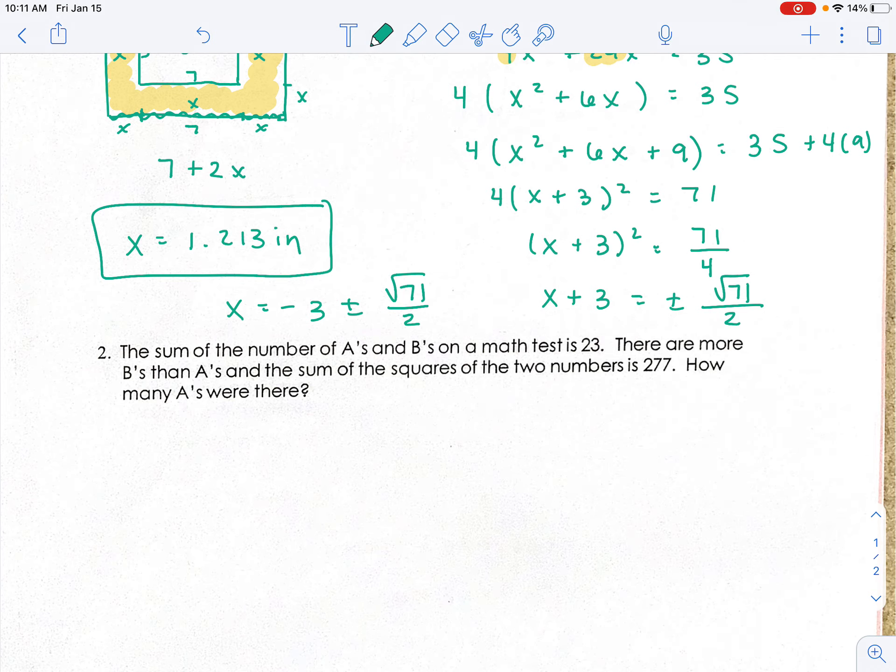All right, another problem here. The sum of the numbers A and B's, sum of the numbers of A's and B's on a math test is 23. So we know the number of A's plus the number of B's is 23.